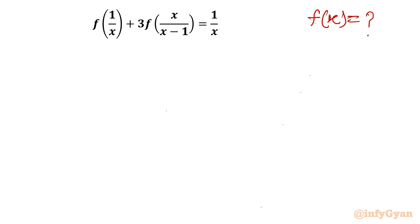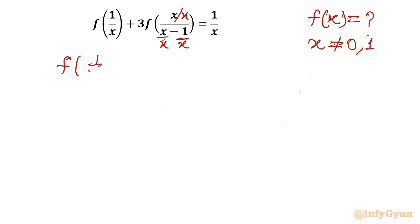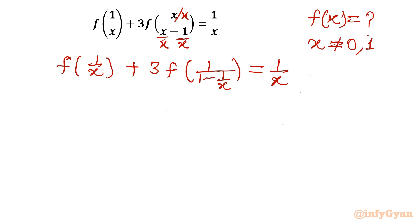Let's get started by writing the domain. The denominator cannot be 0, so x cannot be 0 and cannot be 1 also. Now I will use one algebraic manipulation — I will divide the numerator and denominator by x. What I will get after that is f of 1 over x plus 3 times f of 1 over 1 minus 1 over x, and on the right hand side I will write 1 over x.